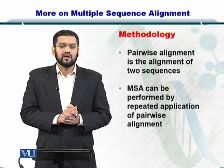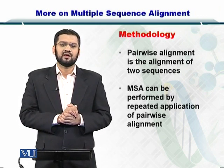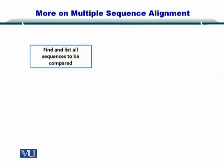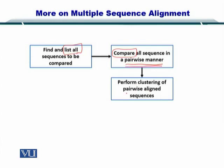Therefore, you simply repeat the process of pairwise sequence alignment in a way that you end up aligning multiple sequences. First of all, you find and list all the sequences to be compared, which can be done by finding their ID. Next, you compare those sequences and build pairwise alignments.